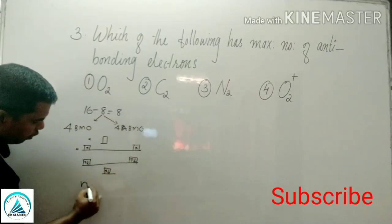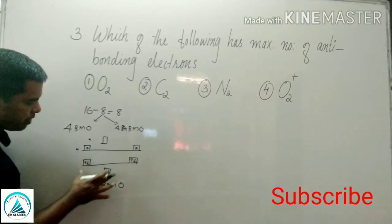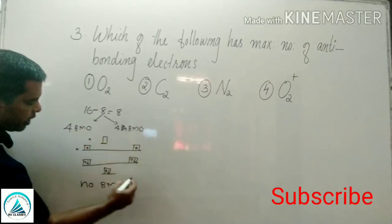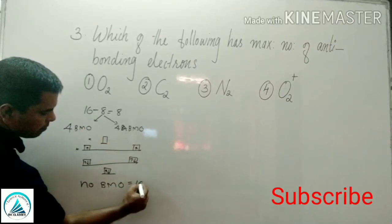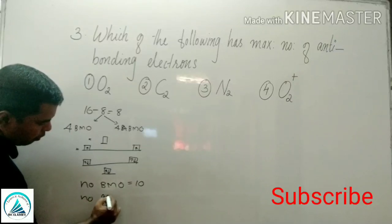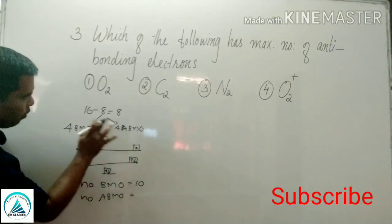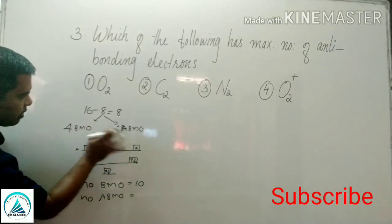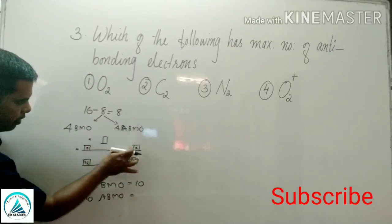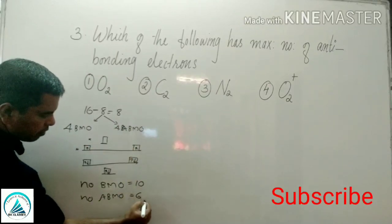Total BMO (bonding molecular orbital electrons) for O2: 6 plus 4 = 10 electrons. Total ABMO (anti-bonding molecular orbital electrons): 4 plus 2 = 6 electrons.